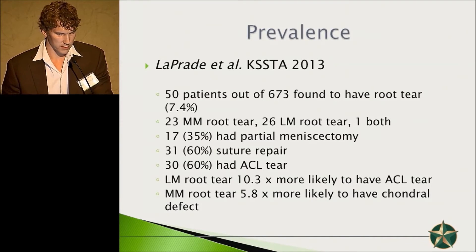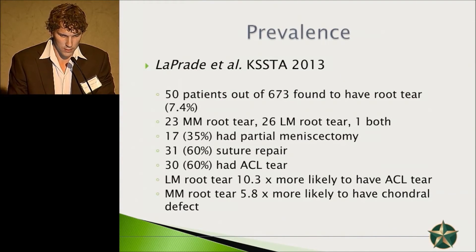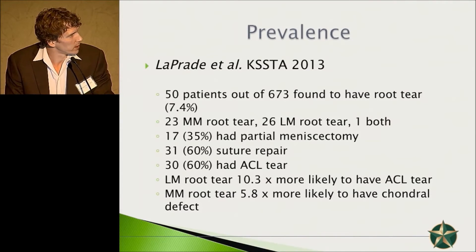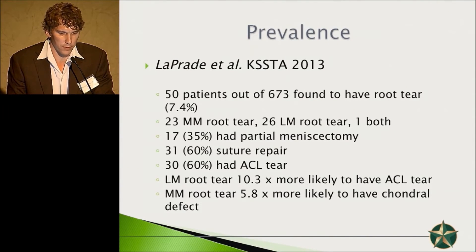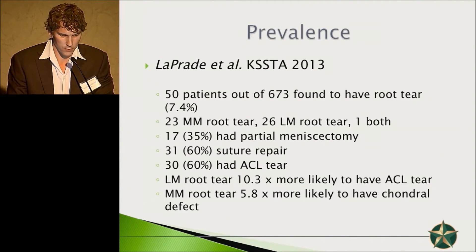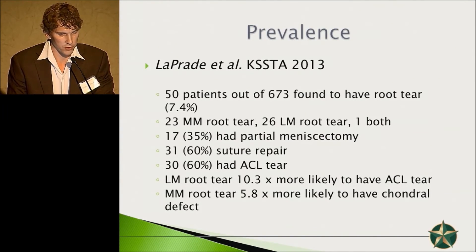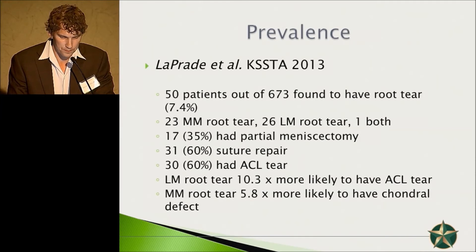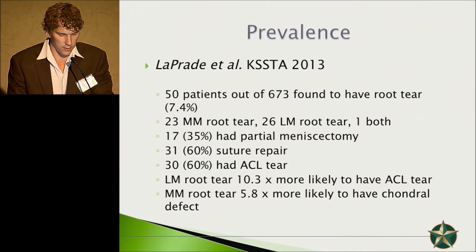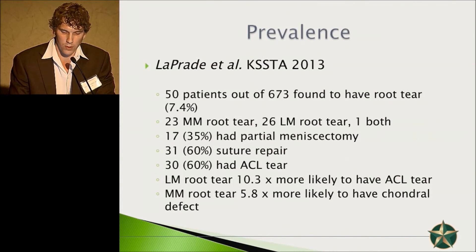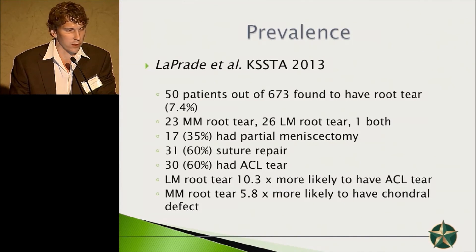Regarding the prevalence of these injuries — 50 patients out of 673 were found to have a root tear, representing 7.4% of patients, which is quite high. Twenty-three had a medial meniscus root tear, 26 had a lateral meniscus root tear, and one had both. Seventeen had a partial meniscectomy and 31 had a suture repair. Thirty of these patients had a concomitant ACL tear. Notably, a lateral meniscus root tear was 10.3 times more likely to be associated with an ACL tear, and a meniscus root tear was 5.8 times more likely to have an associated cartilage defect.